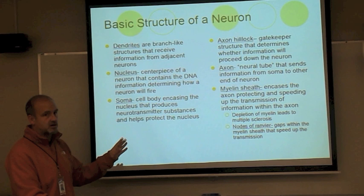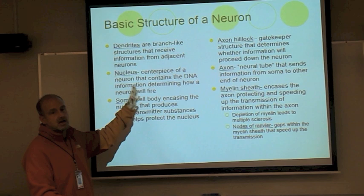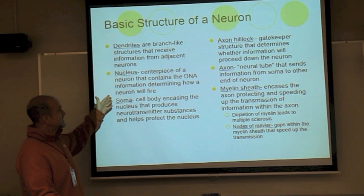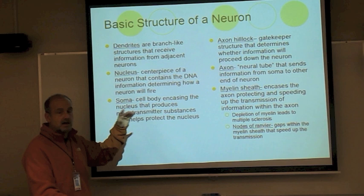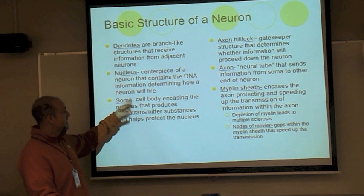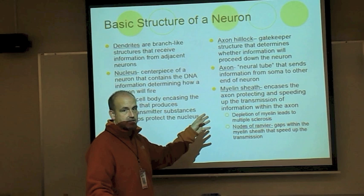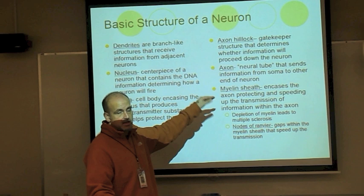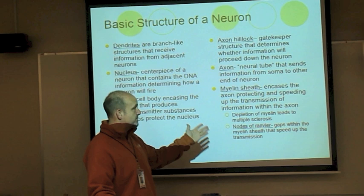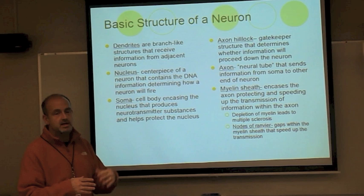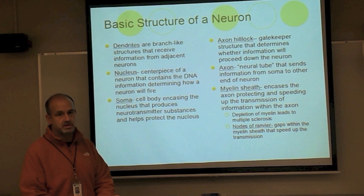To review the parts of the neuron with mnemonics: dendrites — like a doctor receives patients, dendrites receive information. The nucleus is the centerpiece containing DNA, determining how every neuron fires. The soma encases the nucleus and produces neurotransmitter substances. The axon hillock is the gate that determines whether information goes down the axon. The axon is the neural tube — the sending part of the neuron. The myelin sheath, like plastic around a wire, encases the axon, affecting speed and efficiency of transmission.